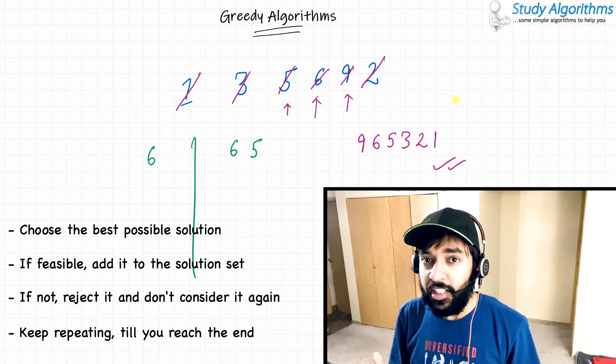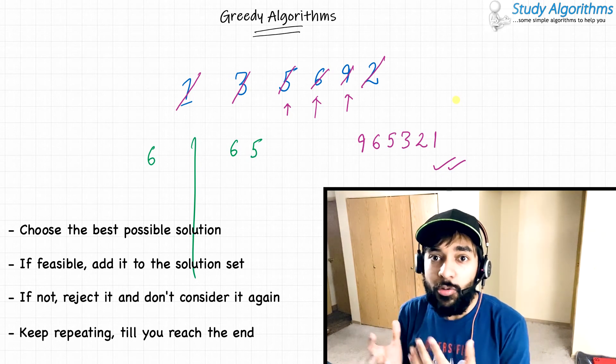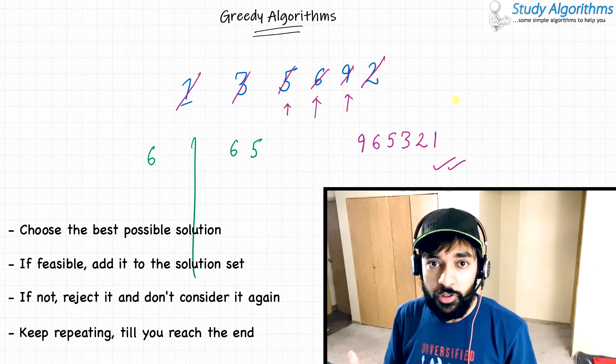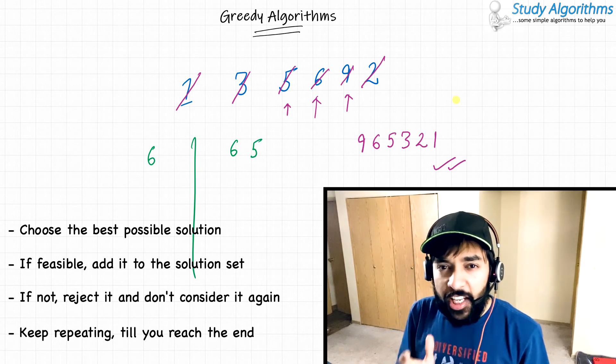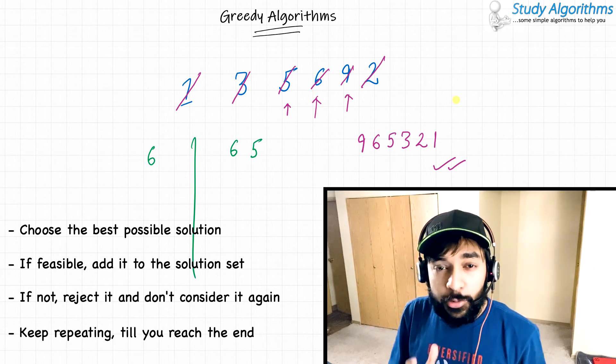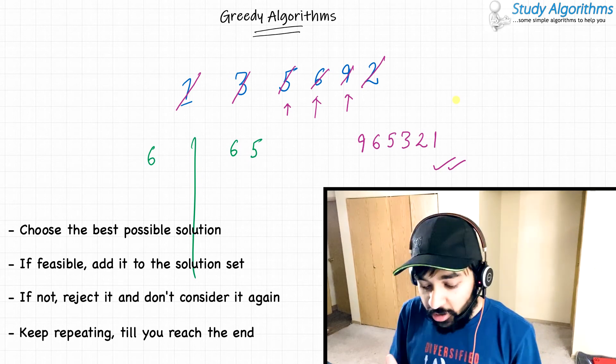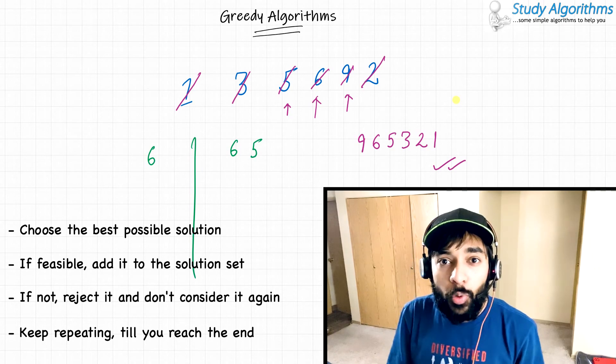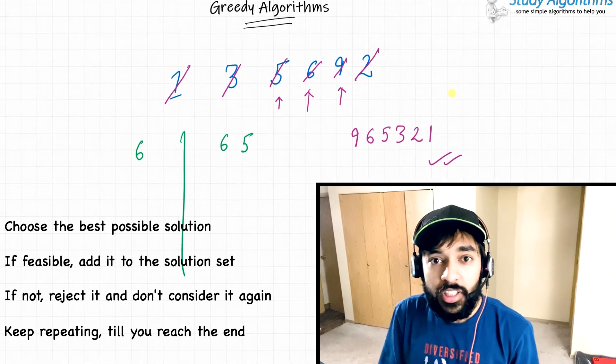Once this algorithm is complete, you would hope that you are reaching the global optimum solution. I know that this was a very basic example of how a greedy algorithm works, but this was required so that you are familiar with the concept and what I actually mean when I say choosing the best for yourself.